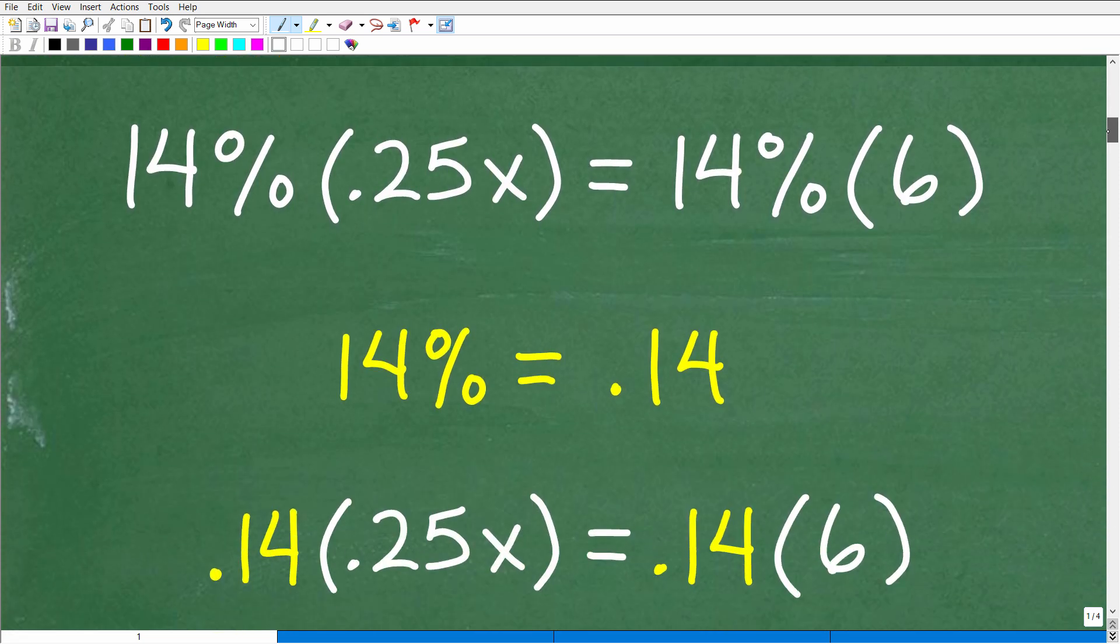All right, let's get into it right now. So here is the equation. We have 14% of 0.25x is equal to 14% of 6. Now, let's just notice something here. Of course, I already kind of wrote out the solution. But this right here, 14% of 0.25, this is just some sort of numeric value.